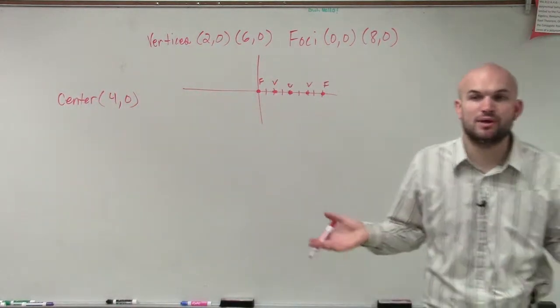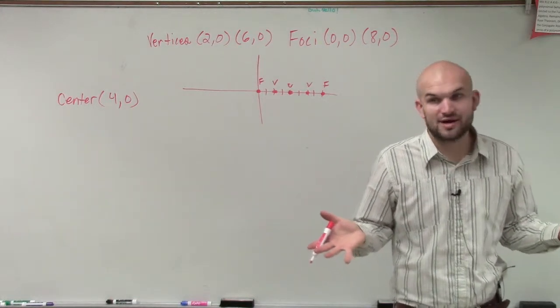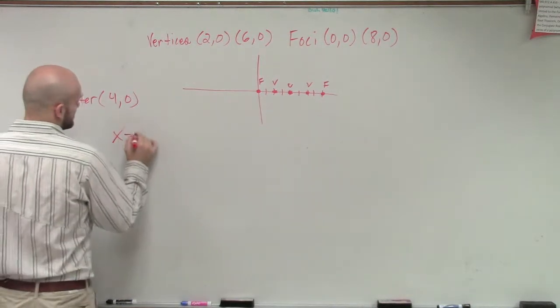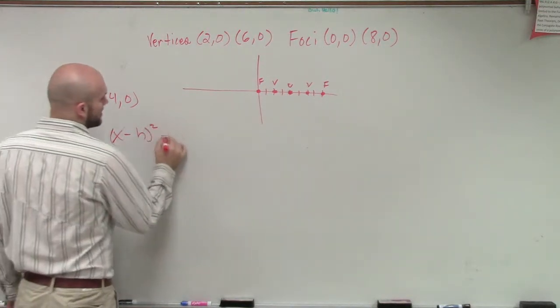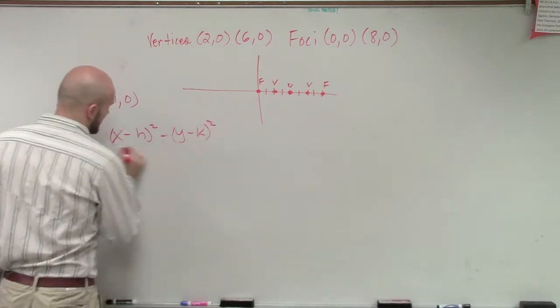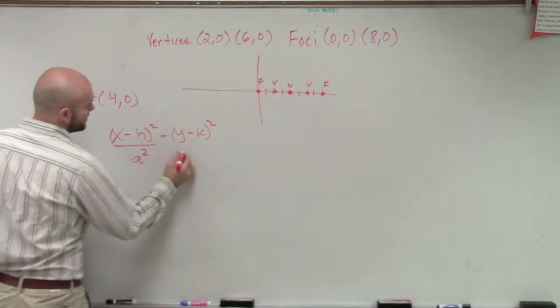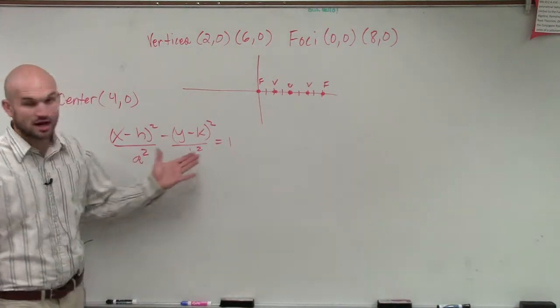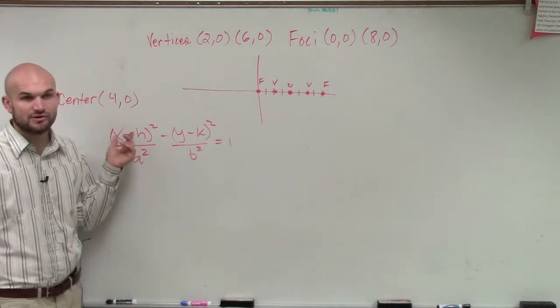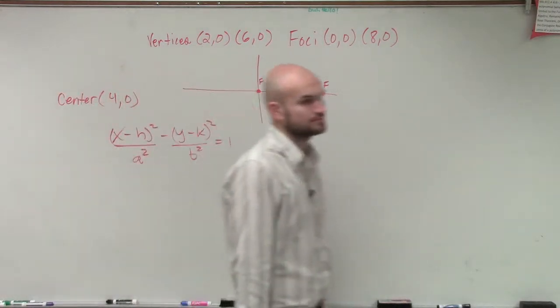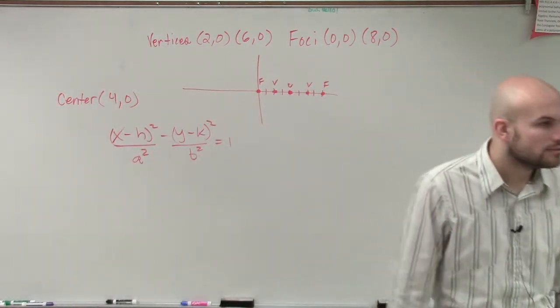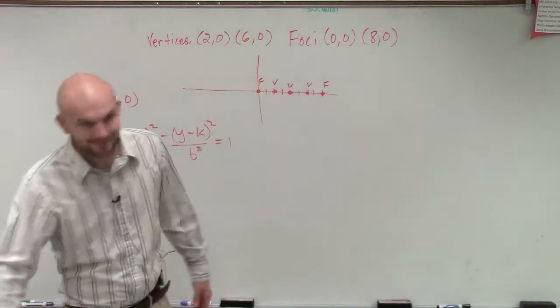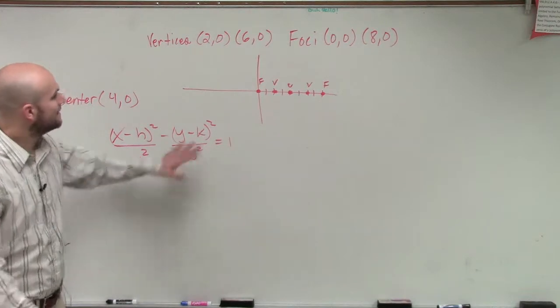Now, let's write that equation. Since we know that we have a horizontal transverse axis, we're going to have x minus h squared minus y minus k squared divided by a squared divided by b squared equals one. It's always a minus b. When it's horizontal, you have your x minus your y.